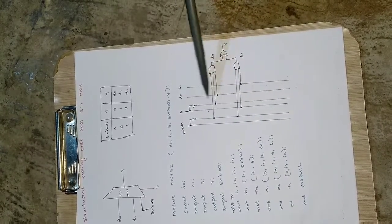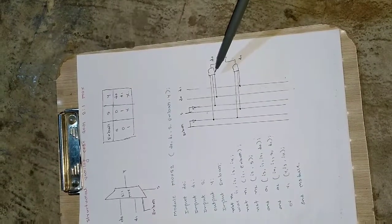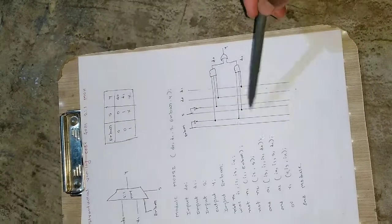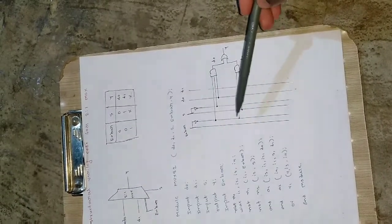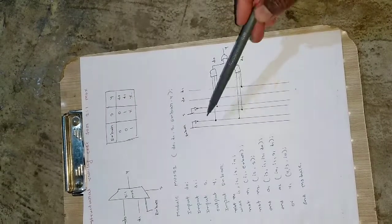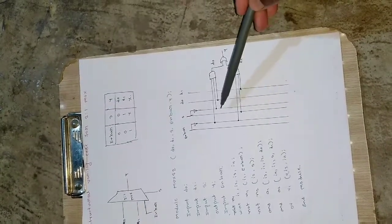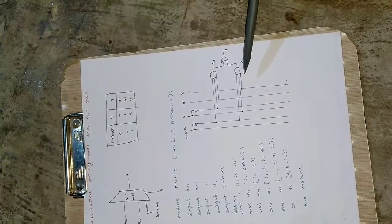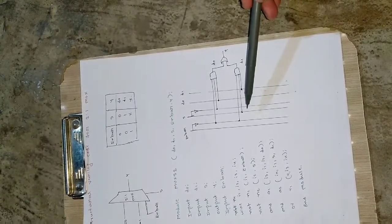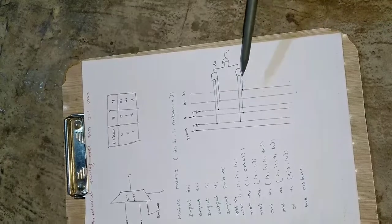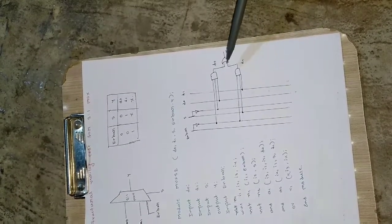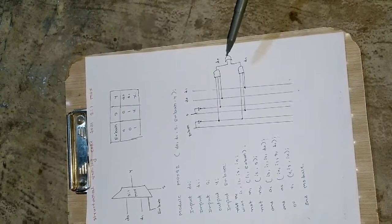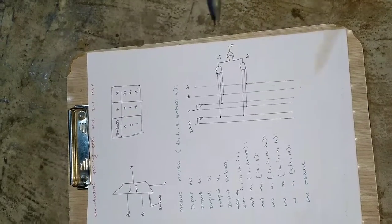For the first AND gate: enable bar inverted (value 0), s inverted (s bar), and d0 are connected — when this condition holds, the output is d0. For the second AND gate: enable bar inverted, s directly (value 1), and d1 are connected — when this condition holds, the output is d1. Either d0 or d1 will be present, but both cannot be present at the same time.